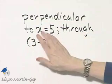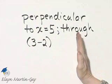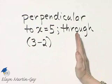So the graph of this line is a vertical line. What type of line is perpendicular to a vertical line?